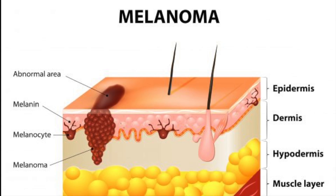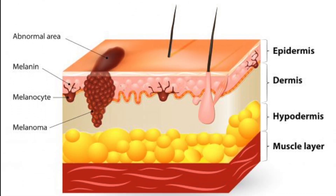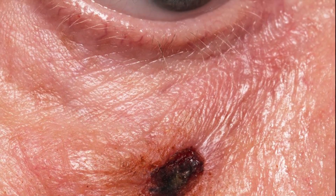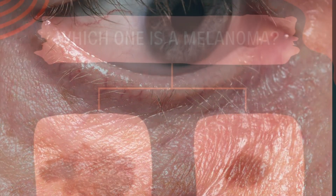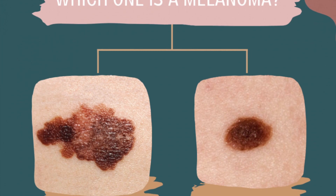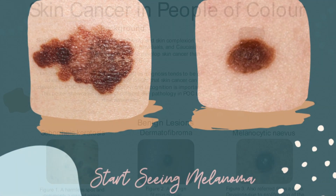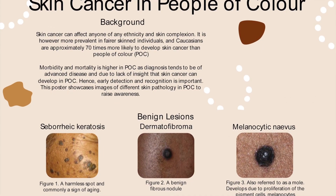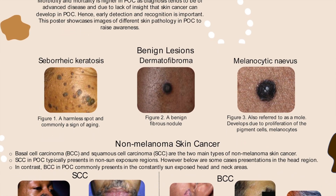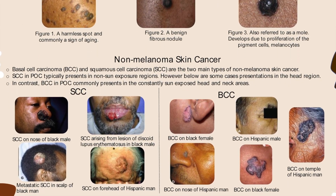Melanoma can develop anywhere on your body in otherwise normal skin or in an existing mole that becomes cancerous. Melanoma most often appears on the face or trunk of affected men. In women, this type of cancer most often develops on the lower legs. In both men and women, melanoma can occur on skin that hasn't been exposed to the sun. Melanoma can affect people of any skin tone. In people with darker skin tones, melanoma tends to occur on the palms, soles, or under the fingernails or toenails.